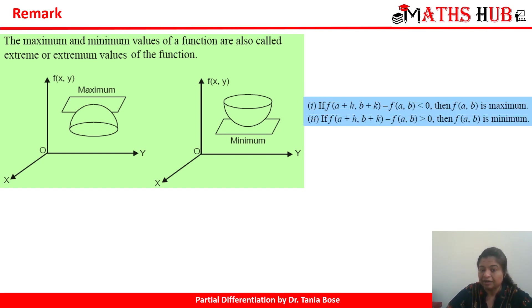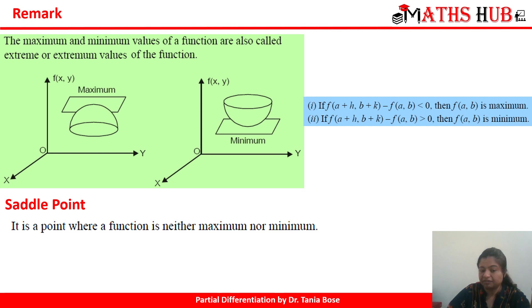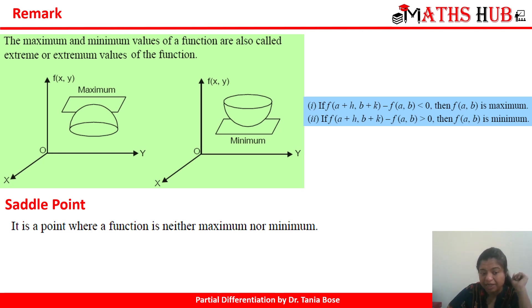A summary: if f(a+h, b+k) minus f(a, b) is less than 0, then the function at (a, b) is said to be maximum. Likewise, if f(a+h, b+k) minus f(a, b) is greater than 0, then the function at (a, b) is said to be minimum. Now, if the function neither has a maximum nor a minimum, that point is called a saddle point.